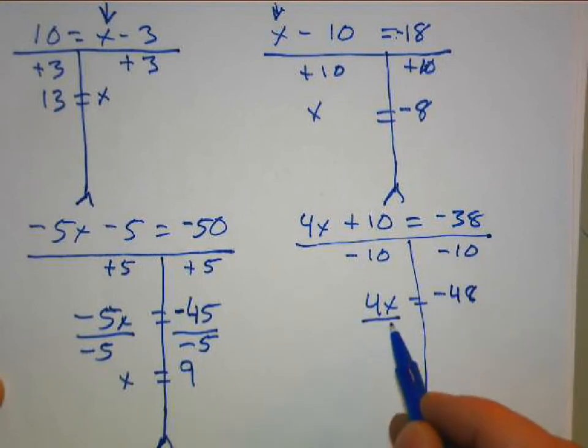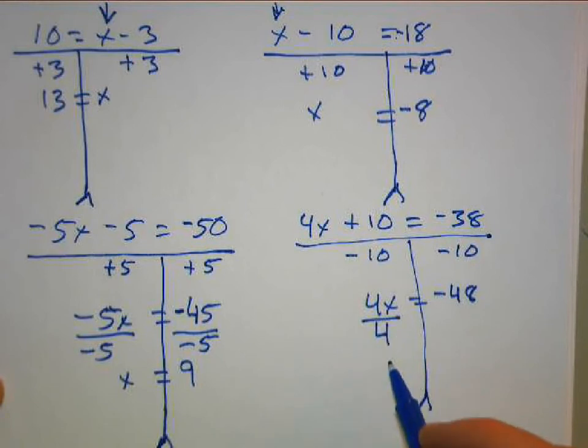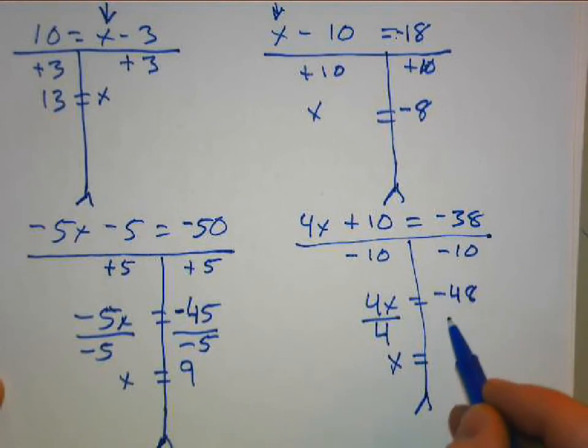Now we have 4 attached to the X through multiplication. It's married to the X with multiplication, so we want to divorce, divide it. So we're going to divide by 4. 4 divided by 4 is 1X. X equals negative 48 divided by 4 is 12. So X equals 12.